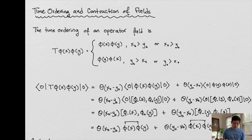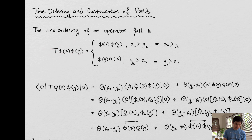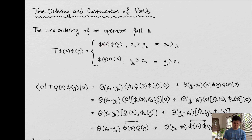Time ordering of an operator is very important. We define it by placing a T in front of our fields. This T means that our fields equal a specific ordering: if x⁰, the temporal component of this space-time point, is greater than y⁰, the temporal component of the other space-time point, then the argument that happened further in time is the initial field, and this is the field configuration right after.